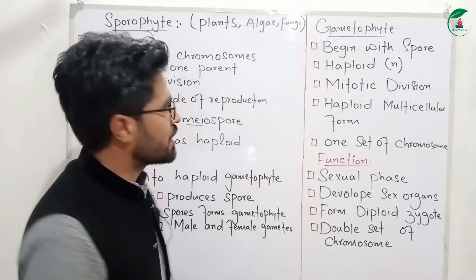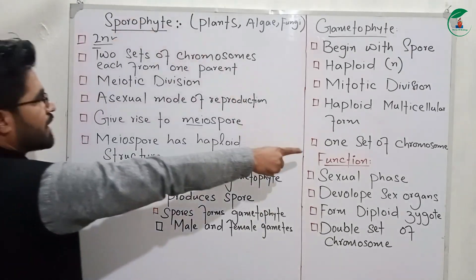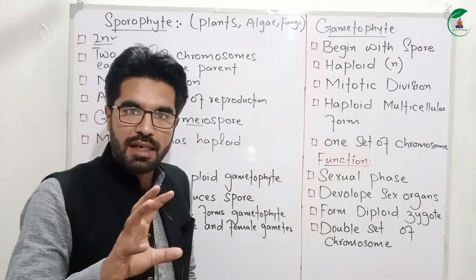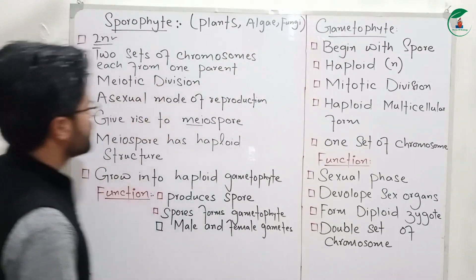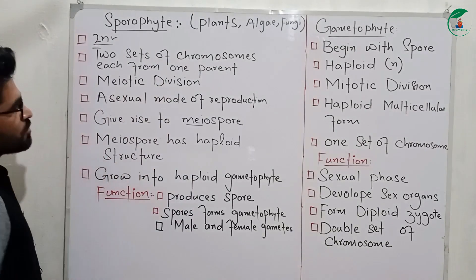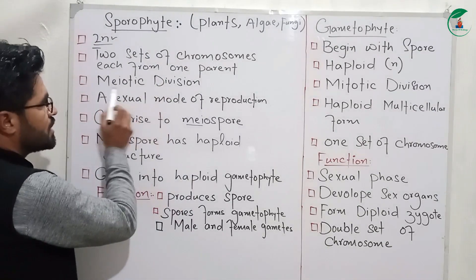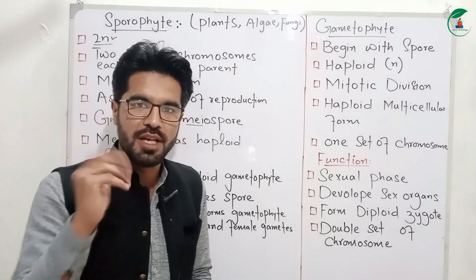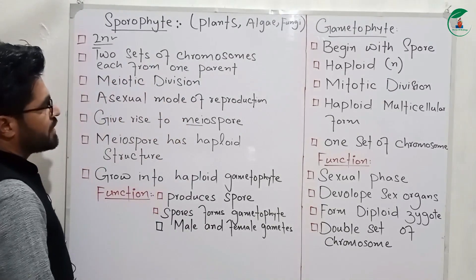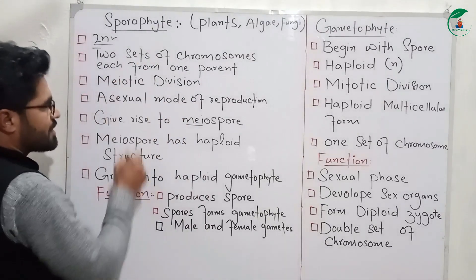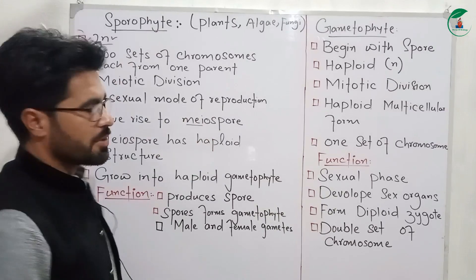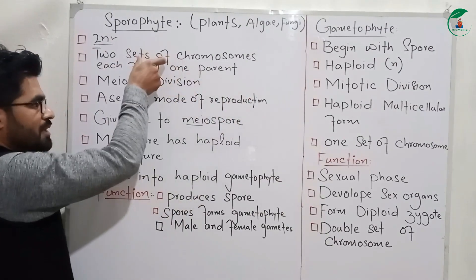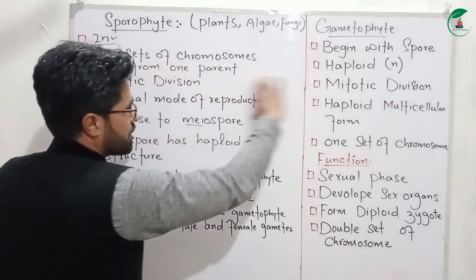The gamete is a spore. The spore has a chromosome. If the spore is produced, we can't distinguish whether they are male or female. The male gamete and female gamete are separate.